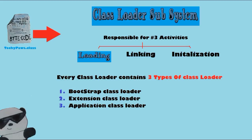Every JVM has three types of class loaders: Bootstrap class loader, Extension class loader, and Application class loader. The Bootstrap class loader loads core Java APIs and is implemented in native languages like C and C++. The Extension class loader is a child of Bootstrap and loads classes from the extension classpath, implemented in Java. The Application class loader is a child of Extension and loads classes from the application classpath using the environment variable CLASSPATH. The class loader subsystem gives highest priority to Bootstrap, then Extension, then Application classpath.